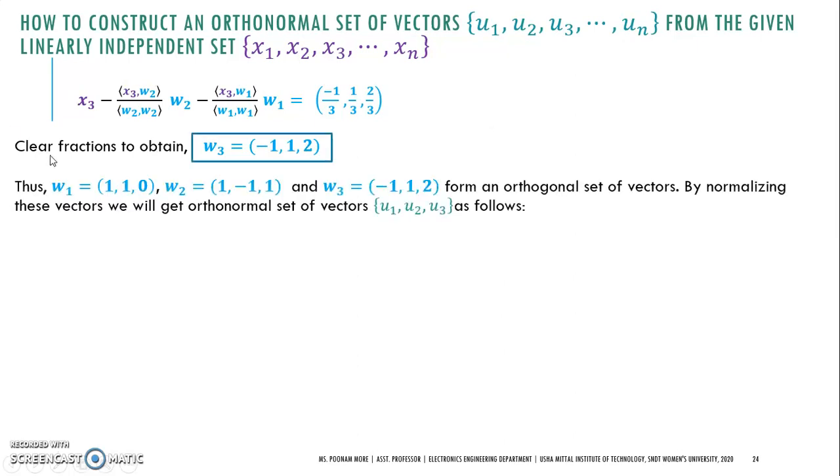Now these form the orthogonal set of vectors, but we want an orthonormal set. Therefore, we will normalize these vectors to get our orthonormal set U₁, U₂, U₃. To get U₁, we divide W₁ by its norm value.